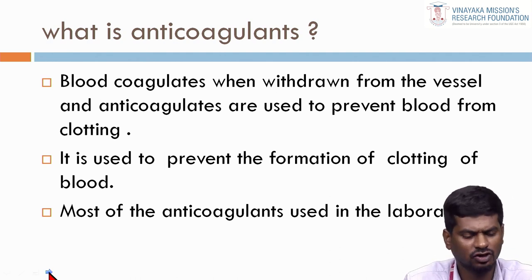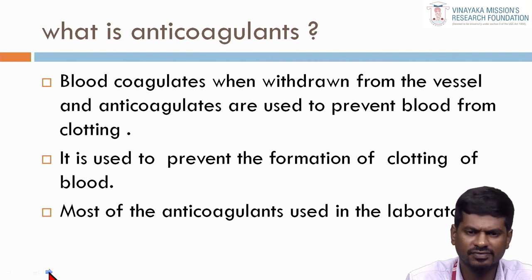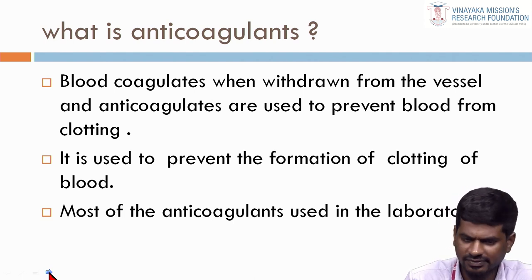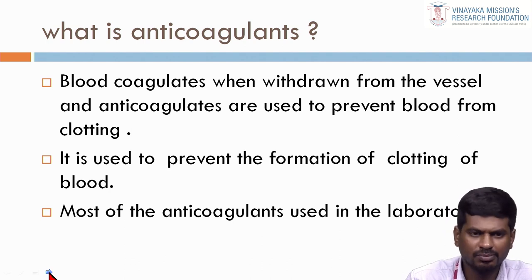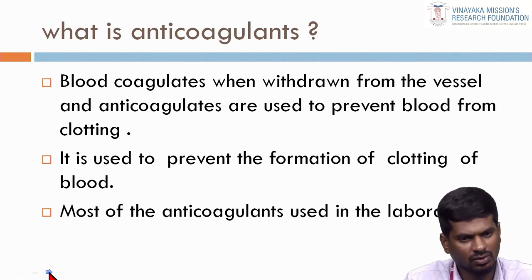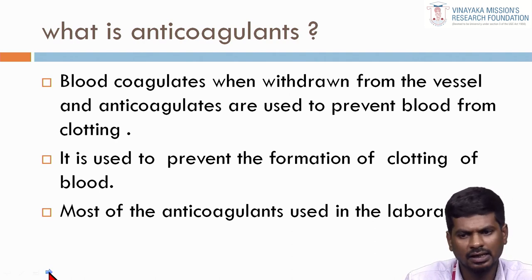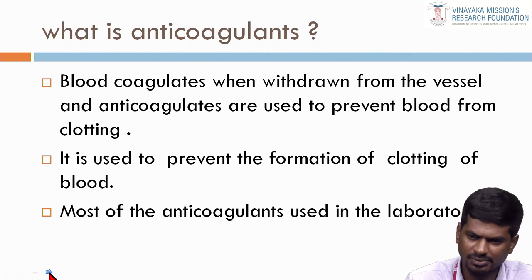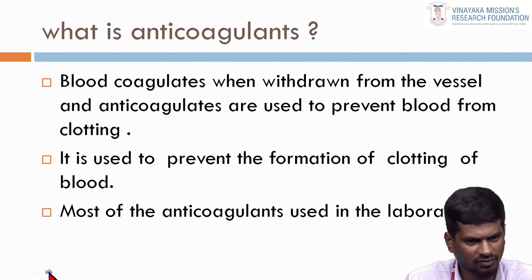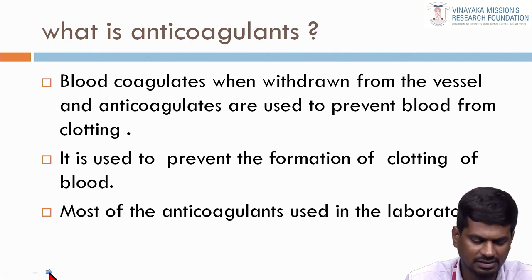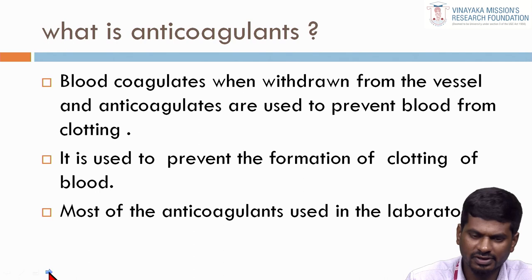What is the definition of anticoagulants? Blood coagulates when withdrawn from the blood vessels. Anticoagulants are used to prevent the blood from clotting. Mainly in our hematology laboratory, we are using anticoagulants for the preservation of the cells and the morphology of the cells. It is used to prevent formation of clotting of the blood.